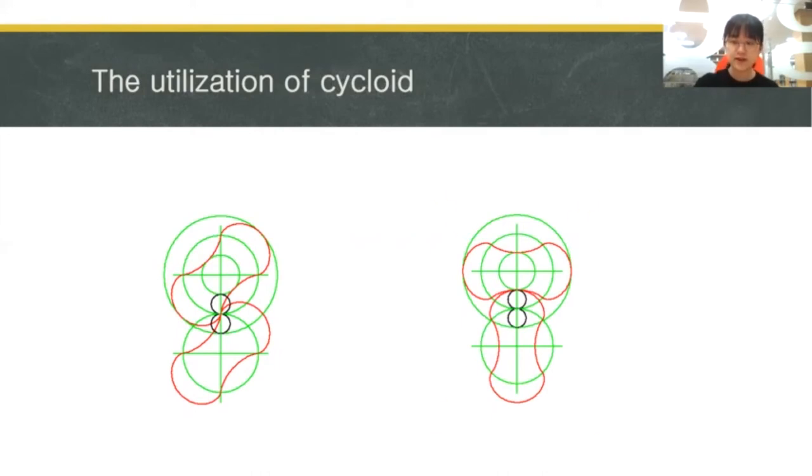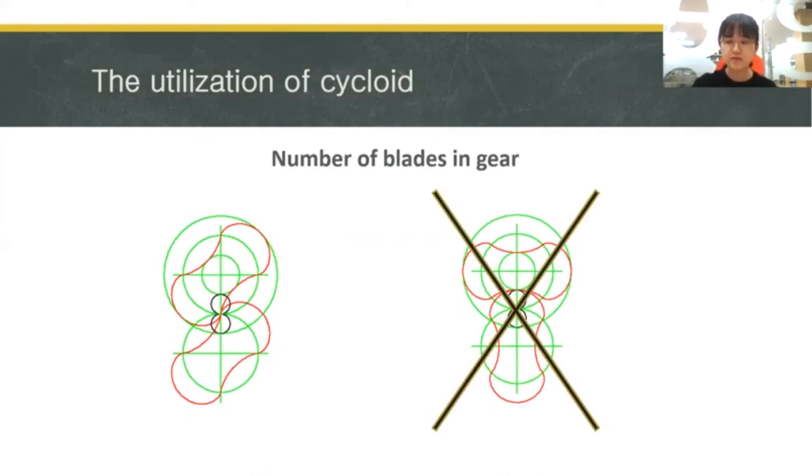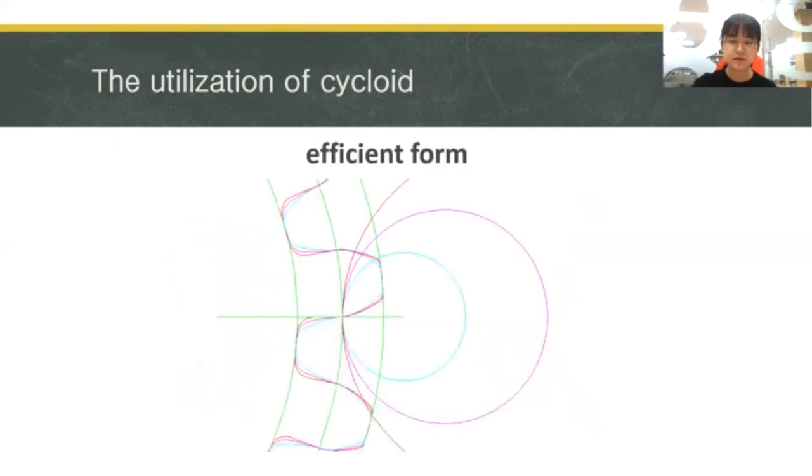The most effective form would be to remove the curve that cannot deliver power and make the circumscribed circle larger. In fact, when designing a gear, various factors are taken into consideration. The equation of the gear can be calculated using epicycloid and hypocycloid.